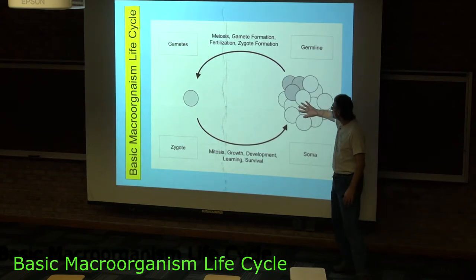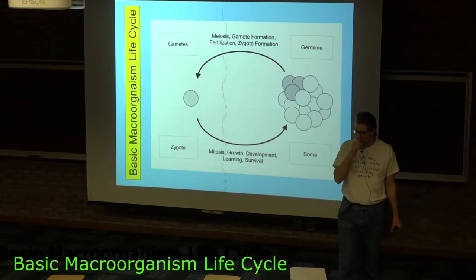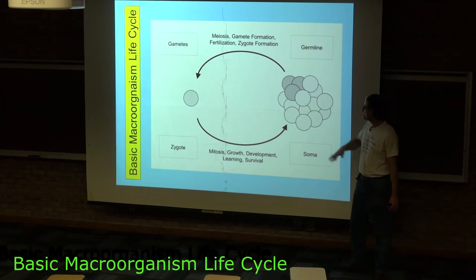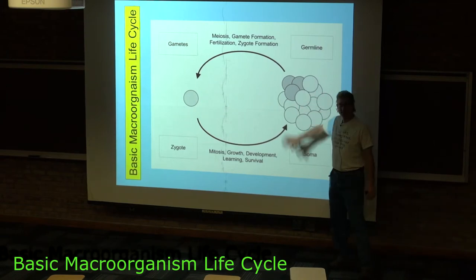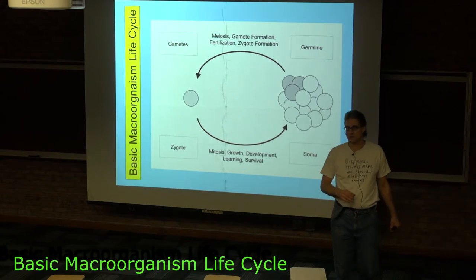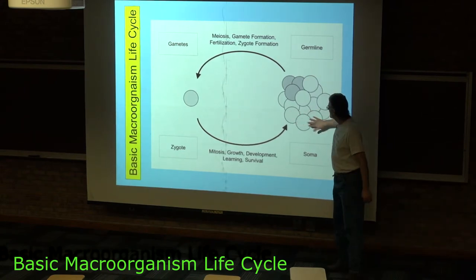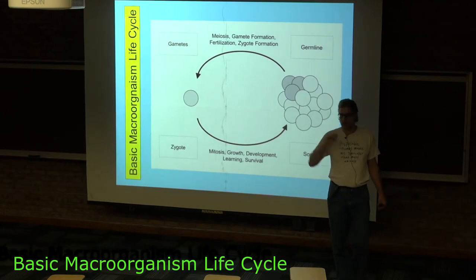You've got actually two issues that come up with multicellularity as severe costs. One of them is that you have what I describe as cheaters from without, parasites that can basically take over the organism to some degree, and make their way from cell to cell to cell, eating up the organism, chomp, chomp, chomp.